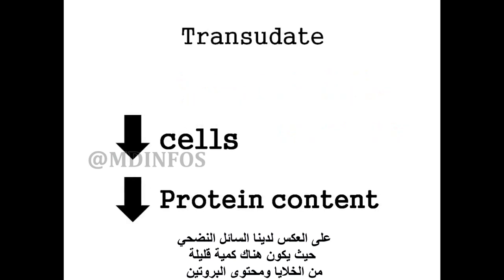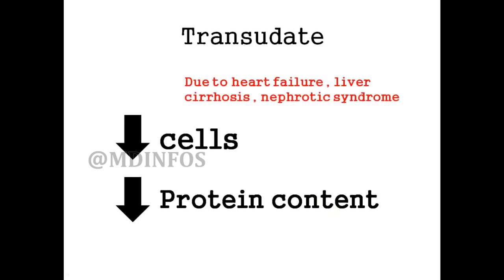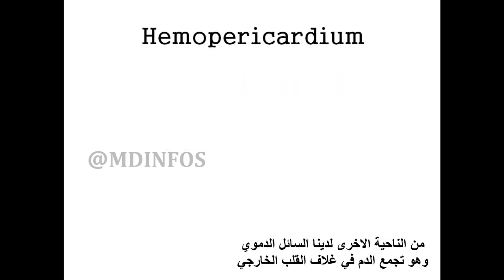On the opposite, we have the transudate pericardial effusion, when we have a low amount of cells and low protein content in the fluid. It is usually due to heart failure, liver cirrhosis, and nephrotic syndrome.